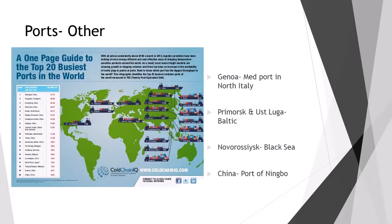There are plenty of other ports of note. This slide gives an indication of typical sizes and importance — many are Chinese, reflecting China's huge consumption of oil. Other notable ports range from Europe to Japan and Malaysia. Outside the top 20, examples include Genoa — the Mediterranean port in North Italy — which gives access to Italy and pipeline infrastructure throughout Europe. Primorsk and Ust-Luga are on the Baltic Sea, connecting Russia to Eastern European markets. Novorossiysk is on the Black Sea. Russia also has the Eastern Siberian Pacific Ocean Pipeline (ESPO), which exports to China and Southeast Asian markets. The key Chinese port to know is Ningbo.